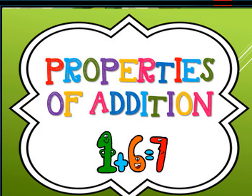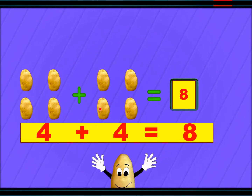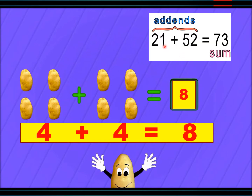You will also learn how to add on number lines. Let us take this simple example. Here in this picture, you can see that we have to add four potatoes to four potatoes. Four plus four is eight. When we add two numbers, the numbers to be added are called addends, and the answer is called the sum or the total. So four and four are addends, and eight is the sum.